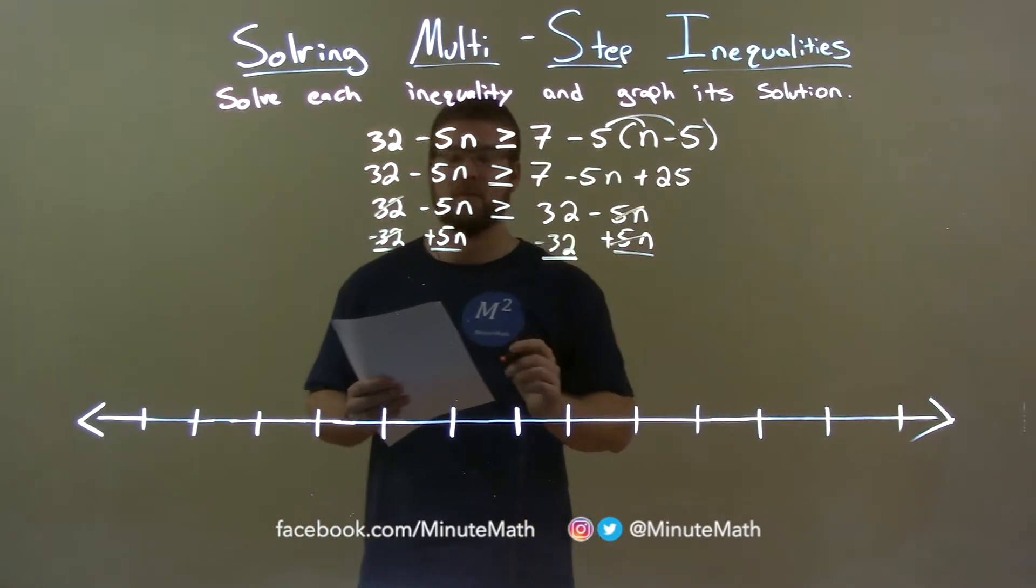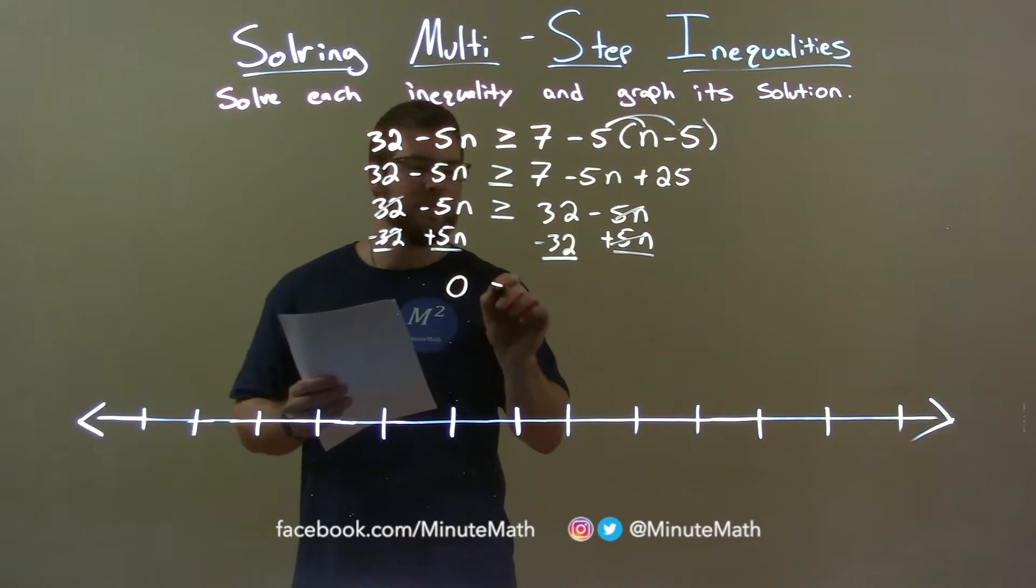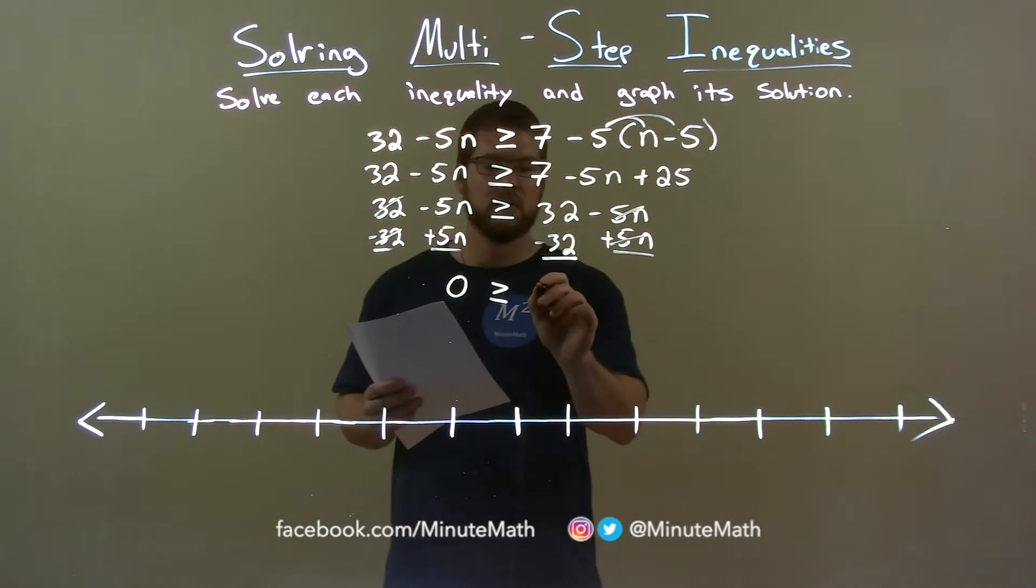32s cancel, 5n's cancel. Negative 5n plus 5n is a 0 and it's less than or equal to and 32 minus 32 is 0.